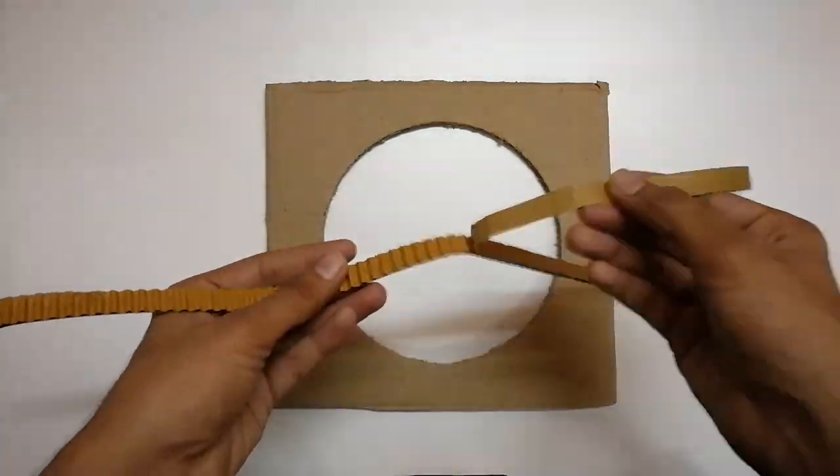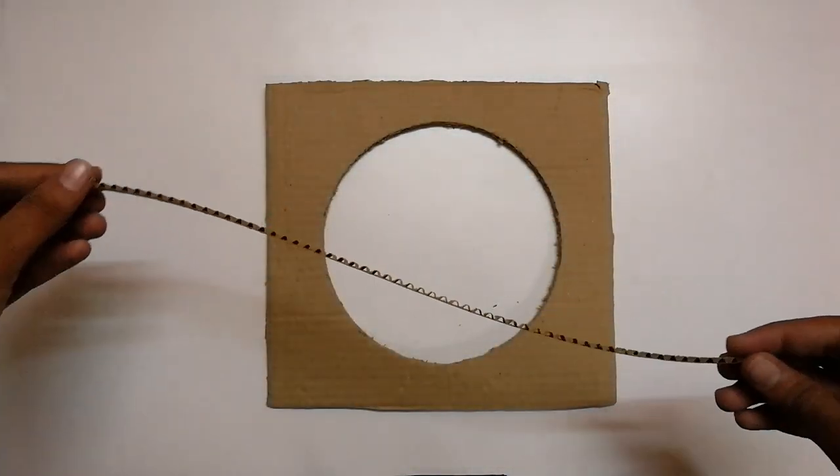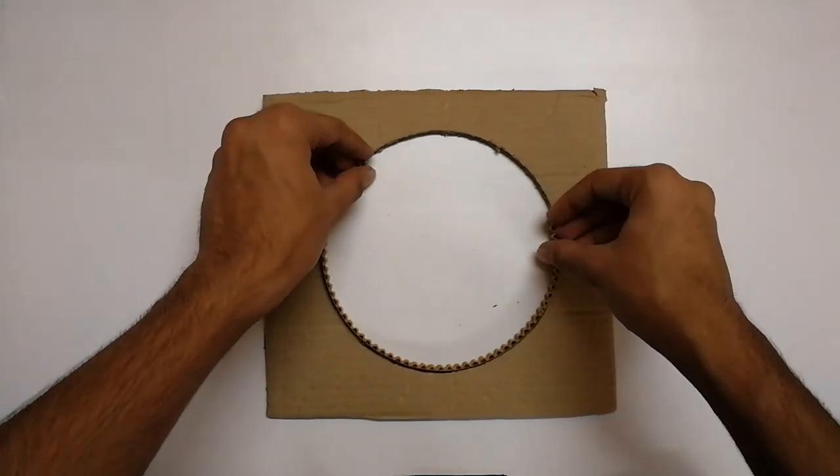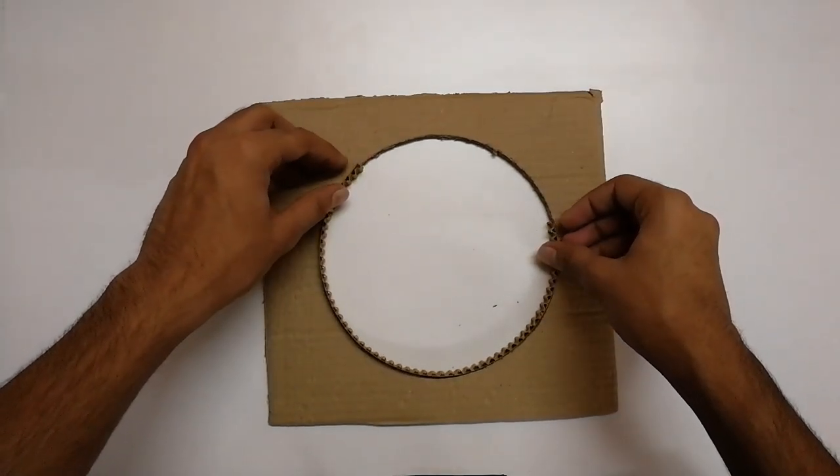Stick it around the circle such that the grains are facing inwards. You can take more than one strip to cover the entire circle.